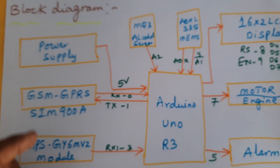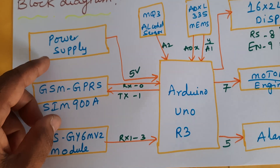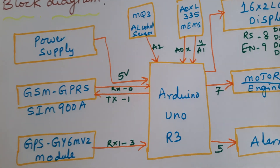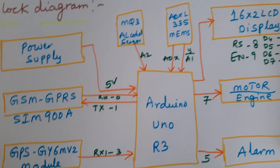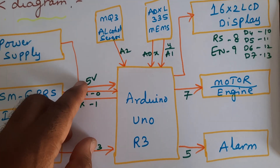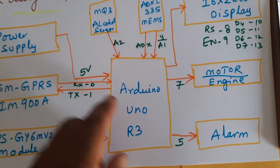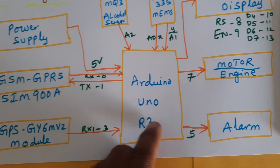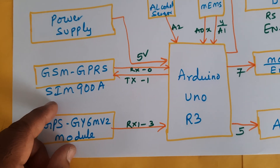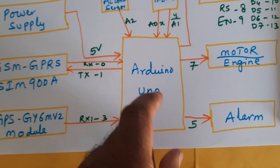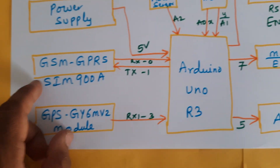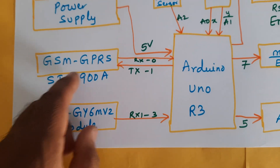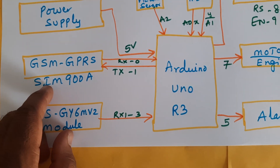We are using a 0 to 9 volts adapter as the power source, which converts to 5 volts pure DC output. This is given to the Arduino Uno R3 board. The Arduino Uno R3 board and the GSM GPRS modem SIM 900E are connected via RX TX pins 0 and 1.